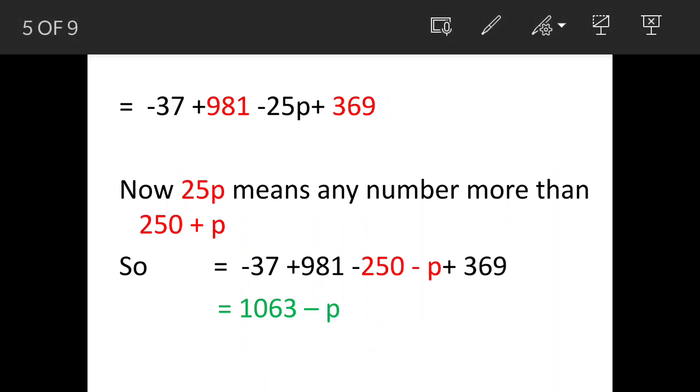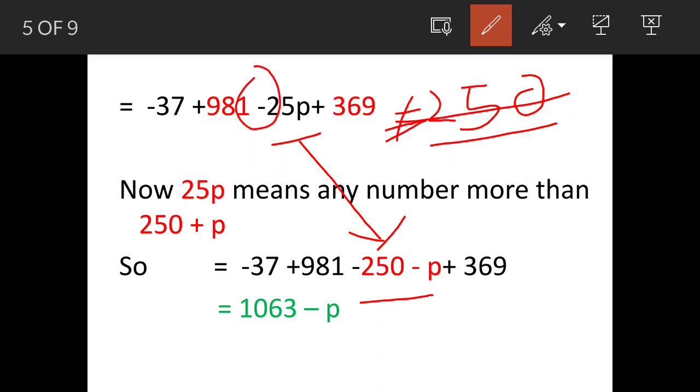The next one is the digit where we are having the missing number. Now 25p means what? This is a number which will be equal to or more than 250. So we can write this number as 250 plus p. Now since there is a negative sign here, this will be minus p and minus 250. So hope up to this part we are clear.